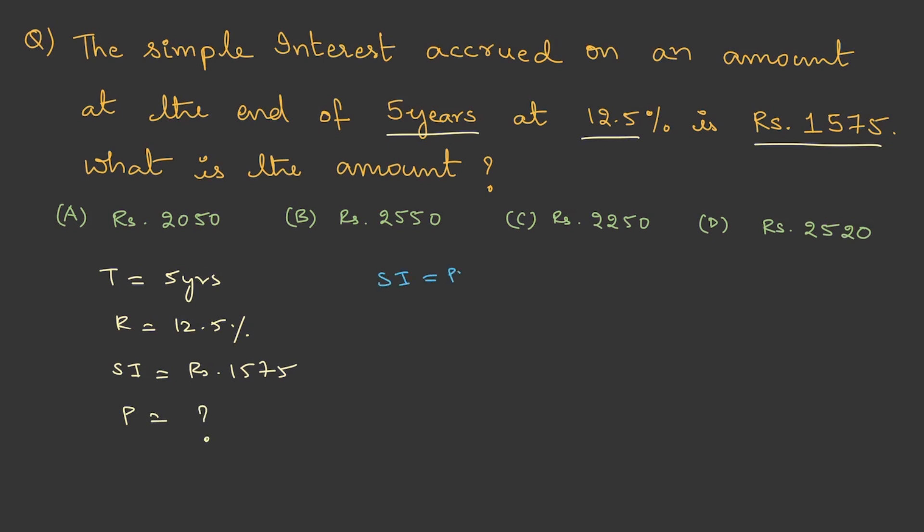We know simple interest is PRT/100, or P = SI × 100 / (R × T). When we substitute, it is 1575 × 100 / (12.5 × 5). That is 157500 / 62.5, or if you do a little bit of division, this is 126 × 20 = Rs. 2520. Therefore, option D.